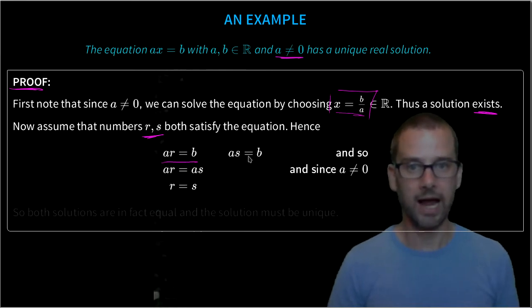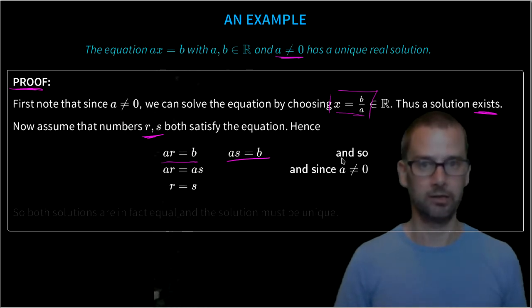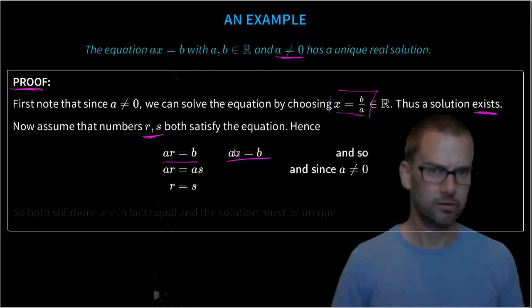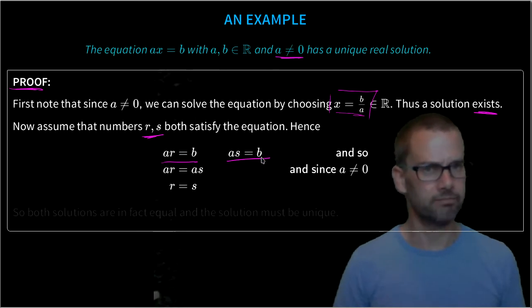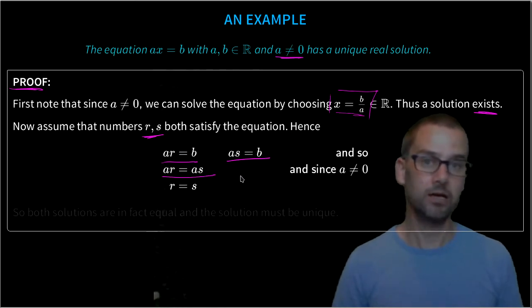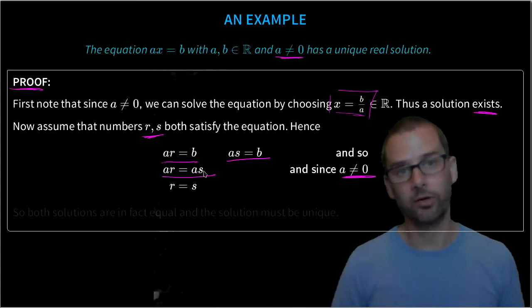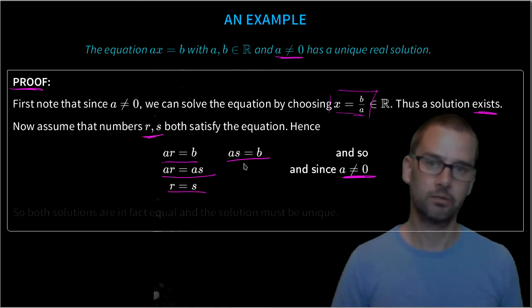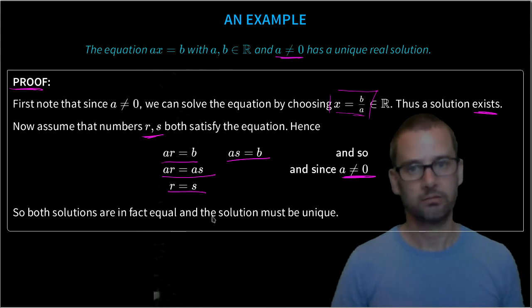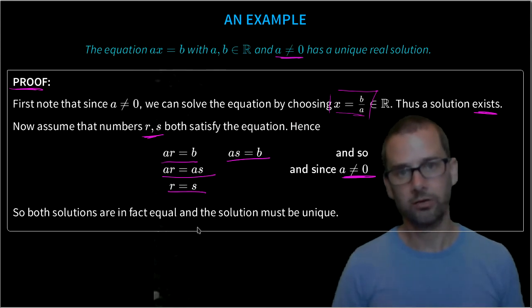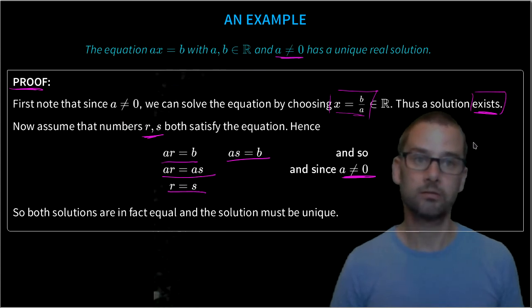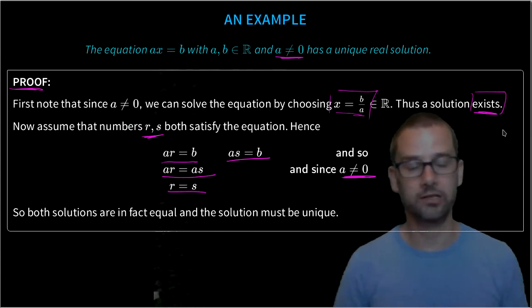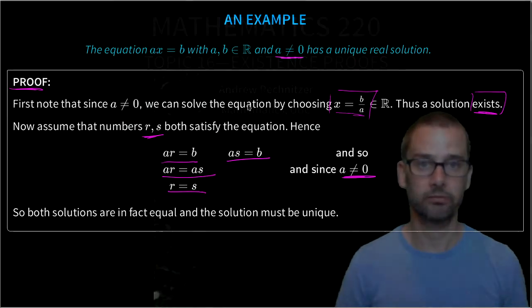Hence we know that ar = b and as = b, so we must have ar = as because they're both equal to the same thing. And since a isn't zero, we can divide both sides of this equation by a to just get r = s. So both these solutions are actually equal, and so the solution we know exists must be unique because all our solutions are actually equal. That's a simple example of a uniqueness proof. Let's stop there.